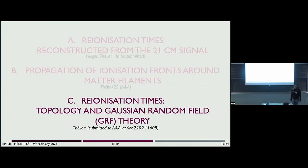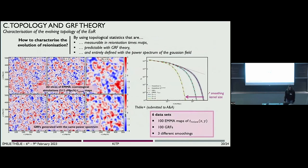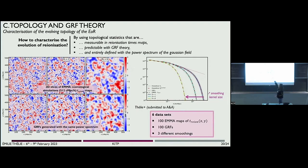Now I'm going to show you some results — some measurements on the reionization times map that we compare with the Gaussian random field theory. We want to characterize the evolution of the reionization process. We use cosmological simulations and measure some statistics within this field and compare them with what we would have with Gaussian random theory. What's interesting with the Gaussian field is that with only the power spectrum, we have all of the information present in this map. We can extract the power spectrum of this simulation and generate a Gaussian random field. By eye, it's rather difficult to say which is the simulated map and which is the Gaussian field.